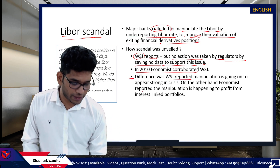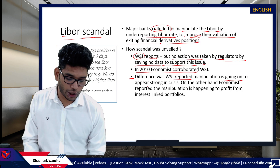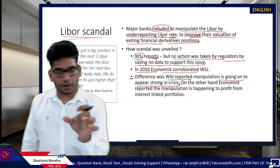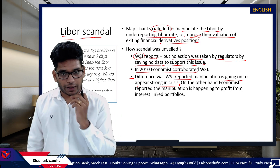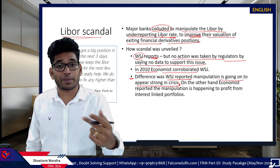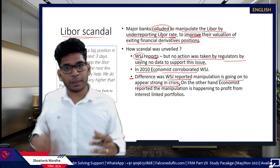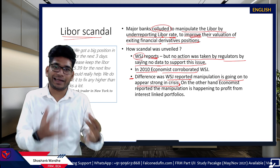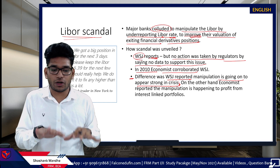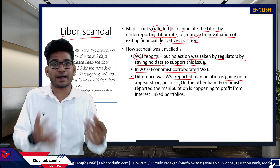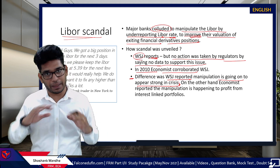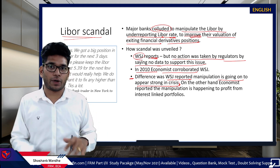The WSJ reported the manipulation was happening for banks to appear strong during the crisis. If banks report LIBOR at a higher rate it signals trouble in borrowing funds — not a good situation. So banks wanted to show they were big, strong banks and that's why they were under-reporting it.